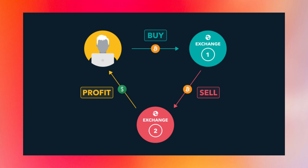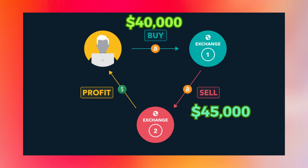For example, Bitcoin costs forty thousand dollars on one site and forty-five thousand dollars on another. By buying Bitcoin for forty thousand dollars on the first site and selling it for forty-five thousand dollars on the second, you get a net profit of five thousand dollars.